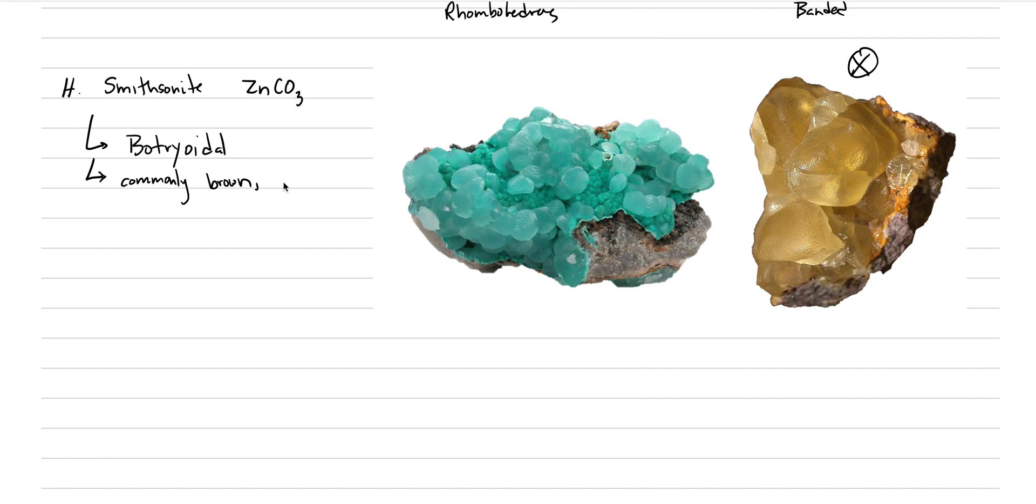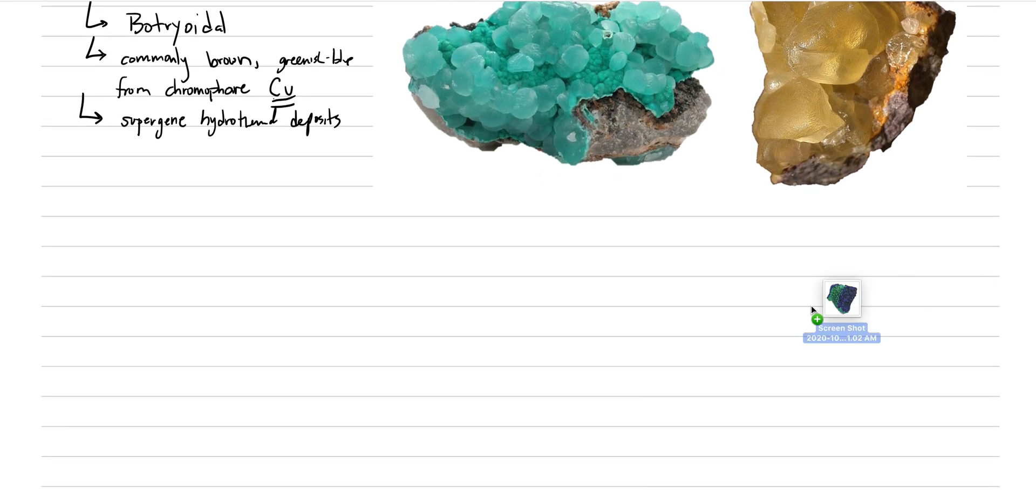But if it's brown or yellow, it's not collected. The beautiful ones are collected, and most of the time when you see it, you'll see shades of green to blue from chromophores of copper. The geologic association with smithsonite is supergene mineral in hydrothermal deposits. It is an ore of zinc too.